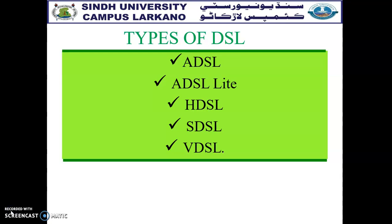ADSL Light is a device that requires no splitter and is based on always-on condition over a digital communication network. ADSL Light is also known as Universal ADSL. ADSL provides asymmetric communication where the downstream bit rate is much higher than the upstream bit rate — downstream means downloading and upstream means uploading. Although this meets the needs of most residential subscribers, it is not suitable for businesses that send or receive large volumes of data in both directions.